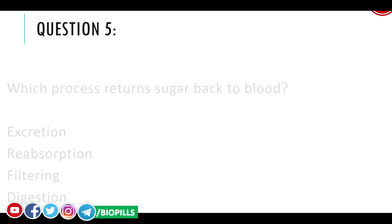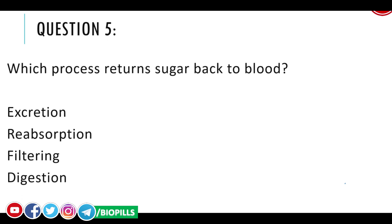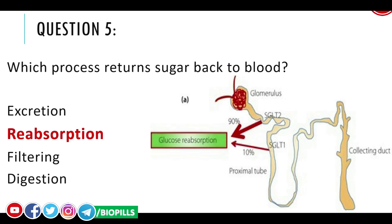Question number five: which process returns sugar back to the blood? Excretion, reabsorption, filtering, or digestion? The answer is reabsorption. In excretion, ultrafiltration occurs in the glomerulus, where nearly all blood components — including glucose — are filtered out of the blood. However, glucose must be returned to the body through a process called selective reabsorption.